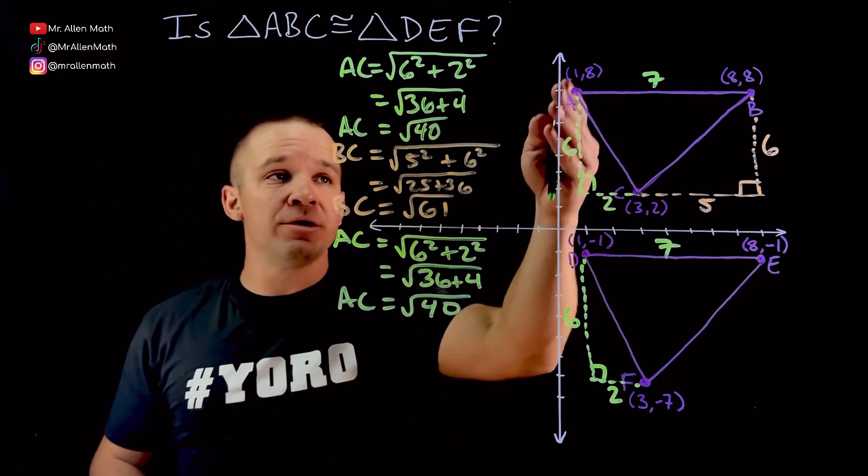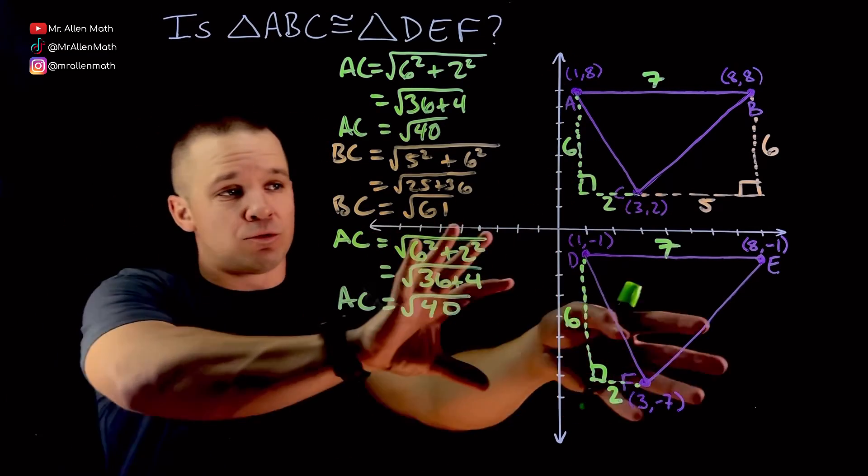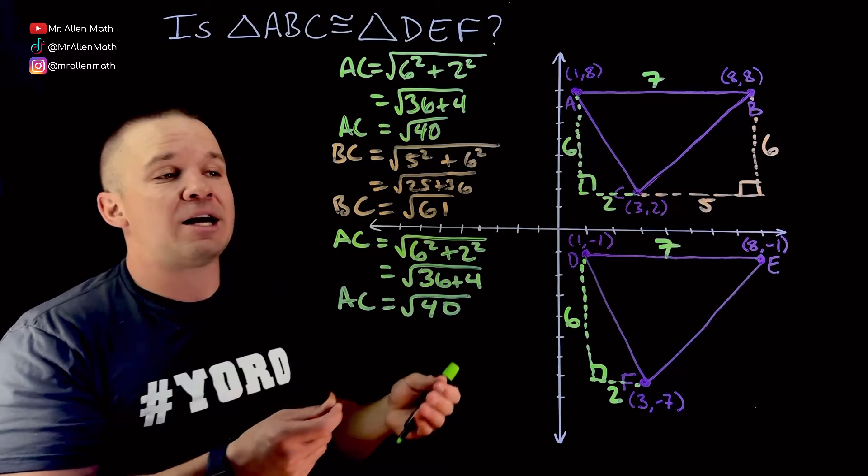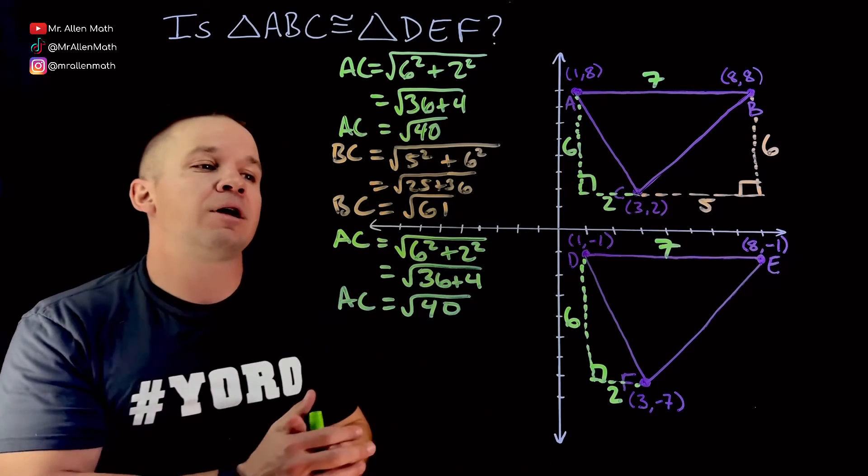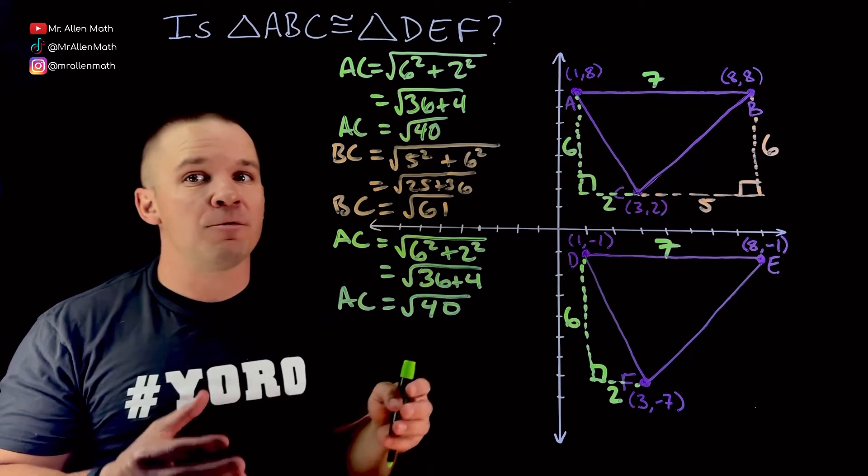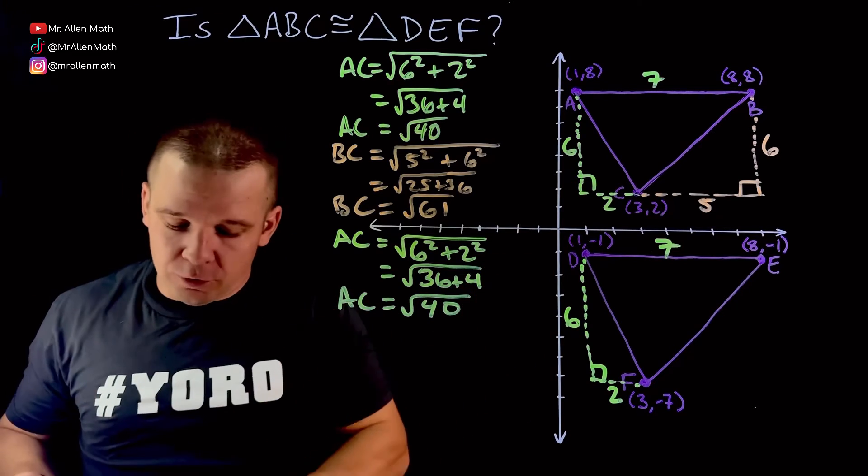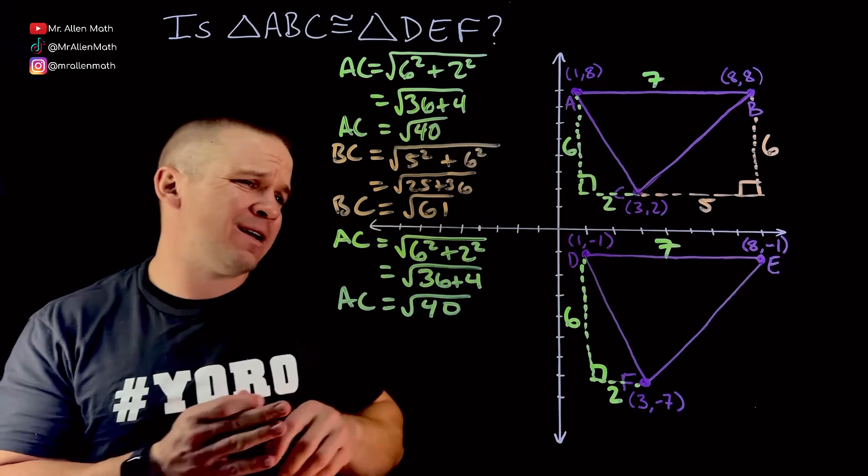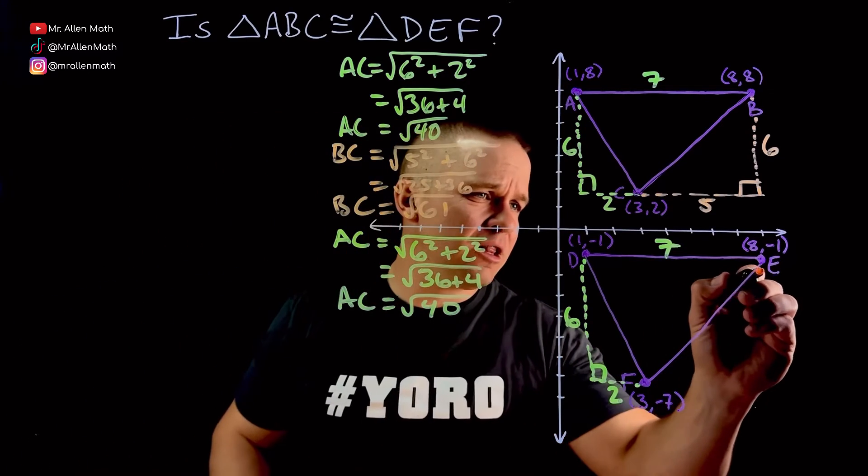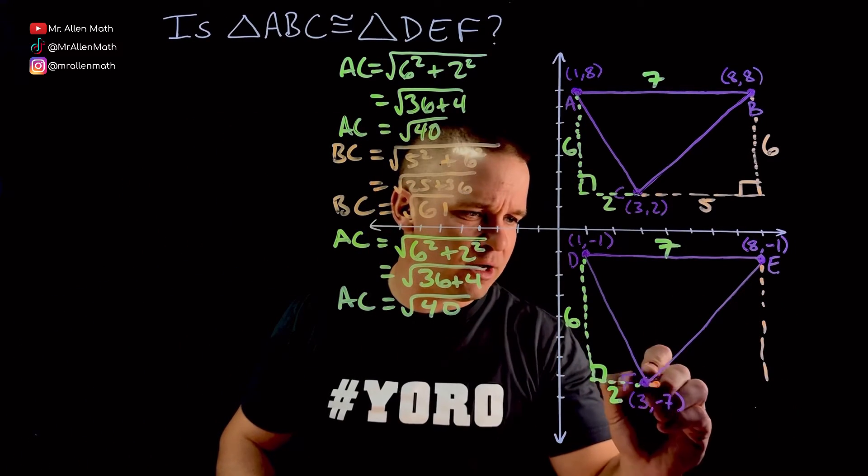And another reason why I wanted to show that is because there are other ways to add to the same thing, right? It's not always going to be exactly that. But if this thing was rotated a bit, it could still possibly be congruent. We could still get the same value by adding two different numbers that are squared together. So, best to just work it all out. We got time.